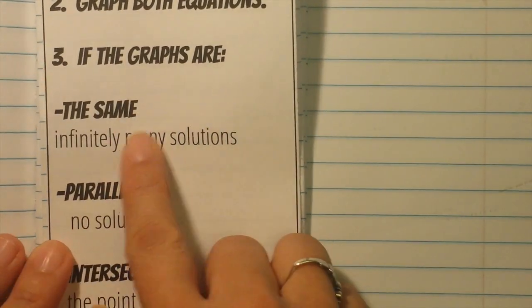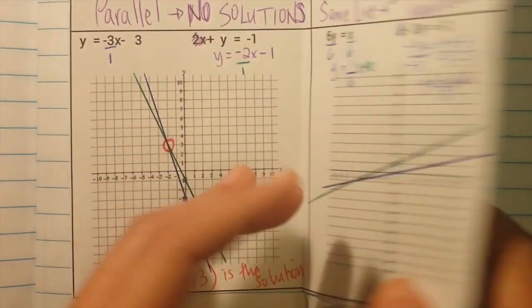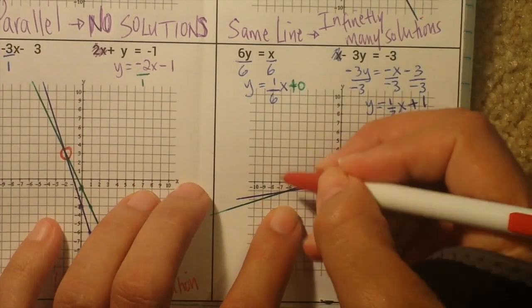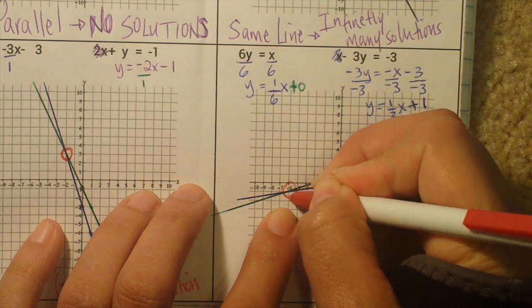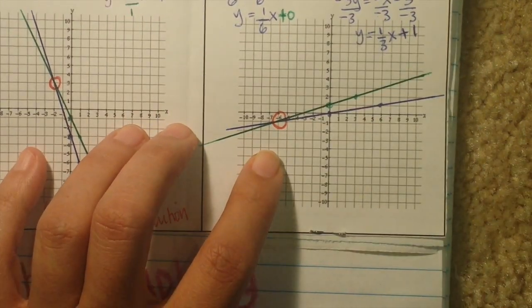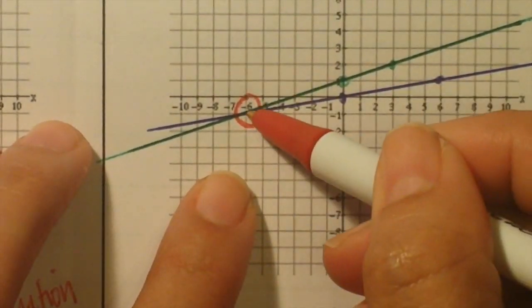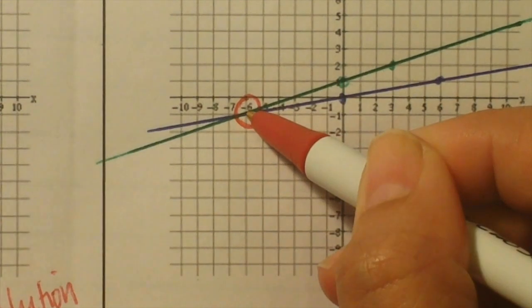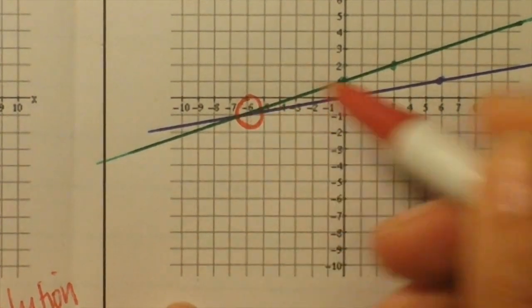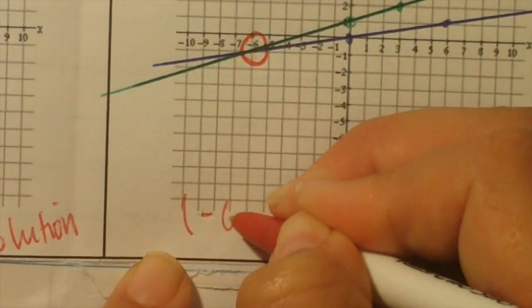The lines are not the same and not parallel — they intersect. The intersection point is negative 6, negative 1. So negative 6, negative 1 is your solution.